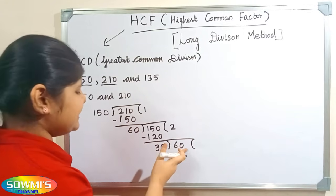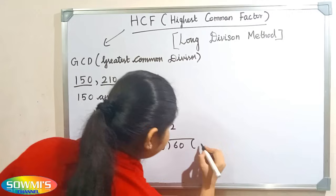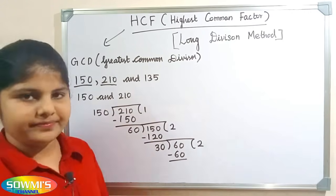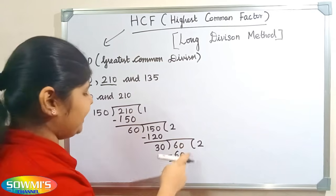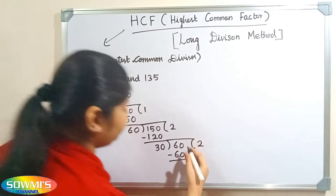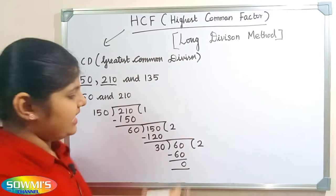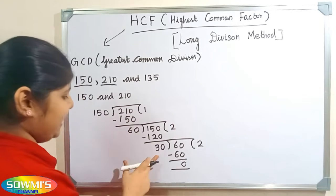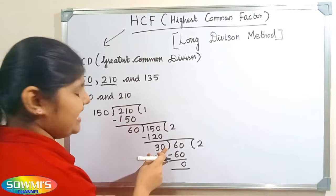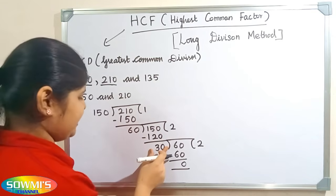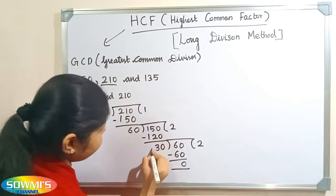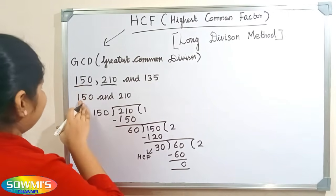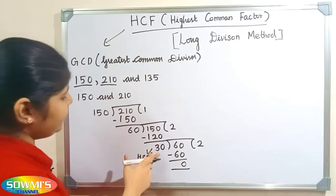Let us divide 60 by 30. Now we will subtract it: 60 minus 60 will be 0. Now we will end the process here because the remainder is 0. The last divisor will be the HCF. Here the last divisor is 30, so the HCF of 150 and 210 is 30.